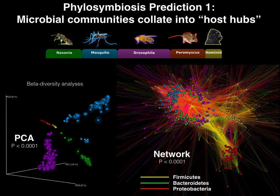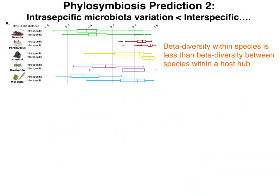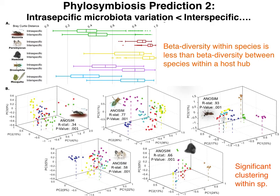A second prediction of phylosymbiosis is that intraspecific microbiota variation should be less than interspecific microbiota variation. If the host has control over what microbes colonize it, intraspecies variation should be less than interspecies variation. For each system we've looked at, that is the case — though there can be a lot of variation across species. Using a 99% OTU cutoff, in each case the intraspecific variation is less than the interspecific variation.